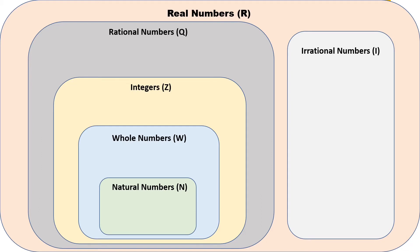Para mas madaling maintindihan ang real numbers, let us use this diagram-based definition. Real numbers can be classified either as rational numbers or irrational numbers. Let's start with rational numbers, beginning from the bottom — natural numbers, or N, also called counting numbers: one, two, three, four, five, six, and so on.